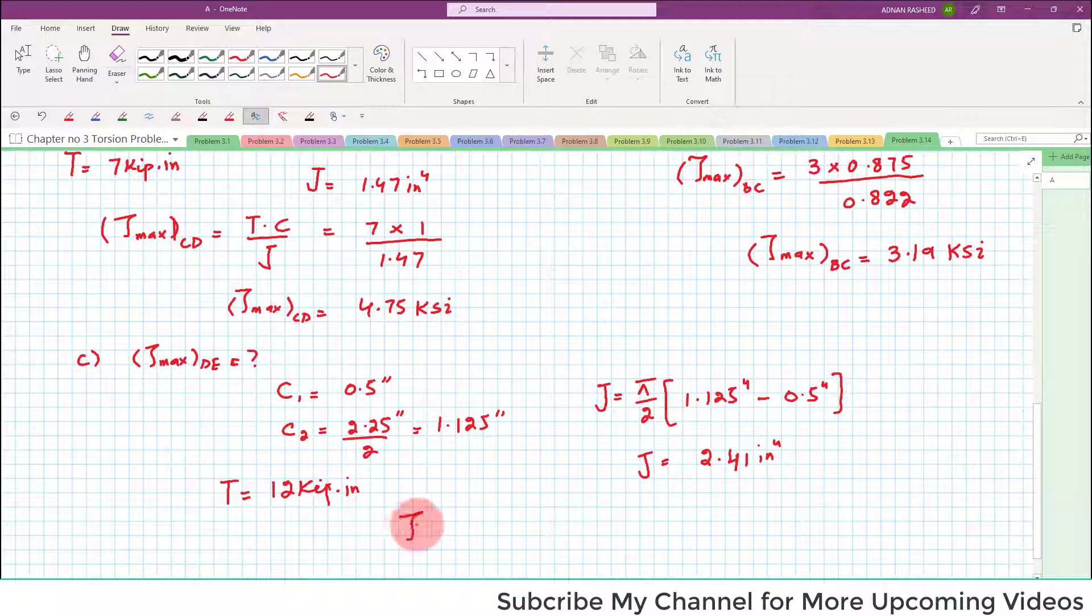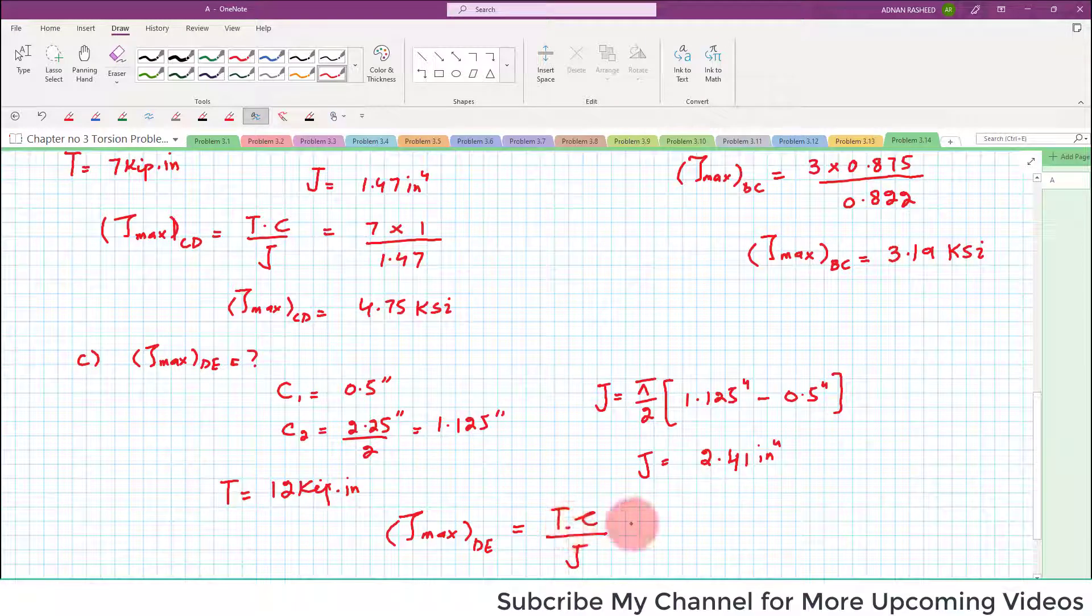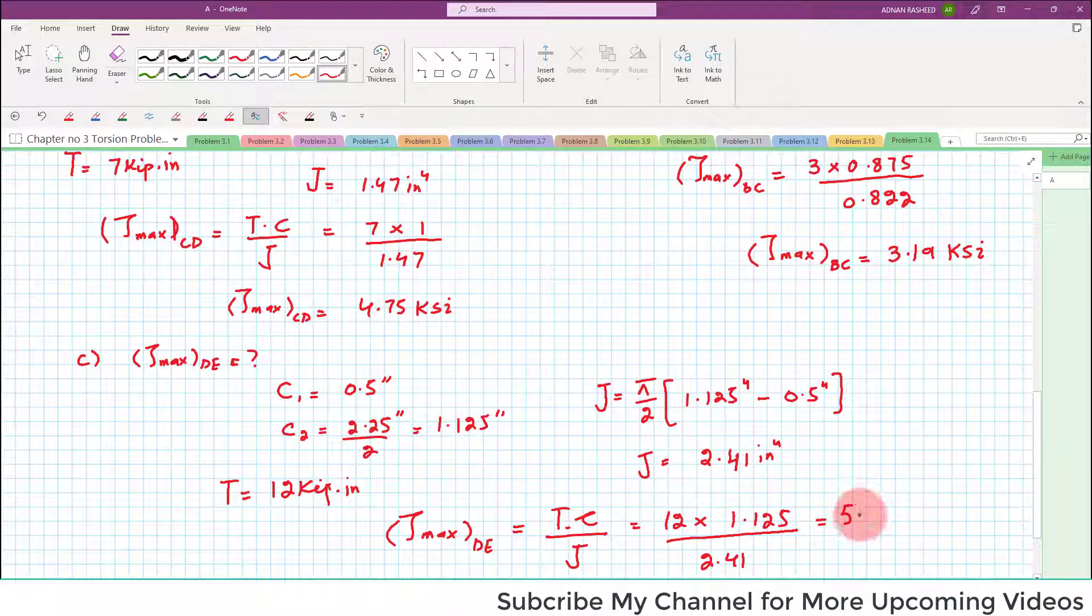So again maximum shearing stress in shaft DE will be equal to T into C divided by J. T is equal to 12, C is 1.125 which is maximum radius and that is outer, and J is 2.41. And that comes out to be 5.58 ksi.